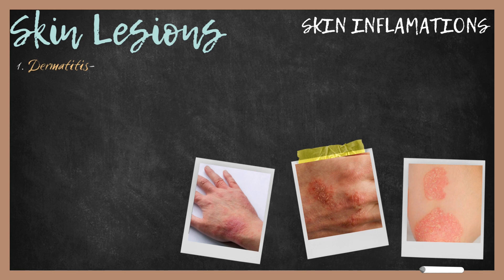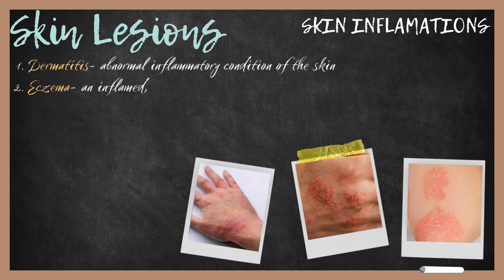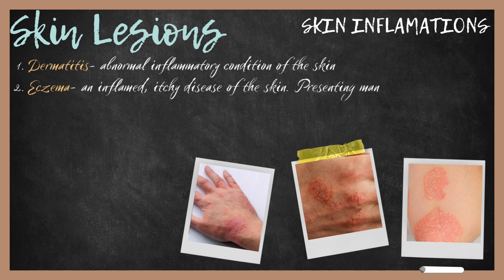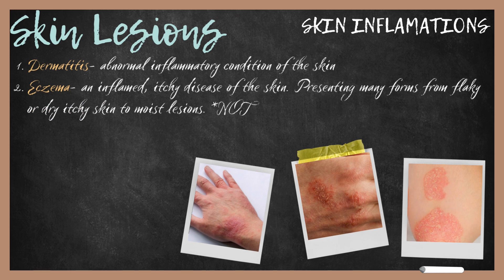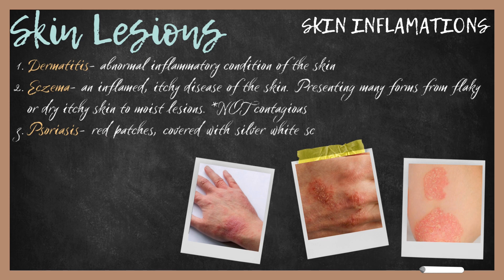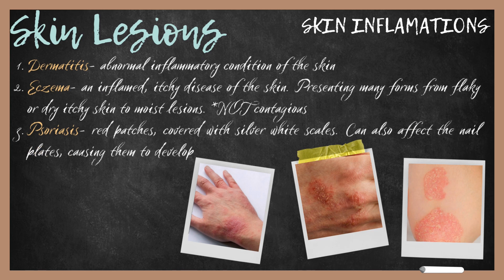Let's talk about some skin inflammations you might come in contact with. Dermatitis is an abnormal inflammatory condition of the skin that comes in various forms such as vesicles or papules. Eczema is an inflammatory, painful, itching disease of the skin that can be acute or chronic, presenting in many forms from flaky or dry itchy skin to moist lesions. Eczema is not contagious but can be treated by a physician. Psoriasis is a skin disease characterized by red patches covered with silver-white scales, usually found on the scalp, elbows, knees, chest, and lower back. Psoriasis can affect the nail plates, causing them to develop surface pits or red spots on the nail bed. If clients are experiencing any of these skin inflammations, we can treat them by giving spa services, paraffin wax, or anything that will help ease pain and moisturize the inflamed skin.